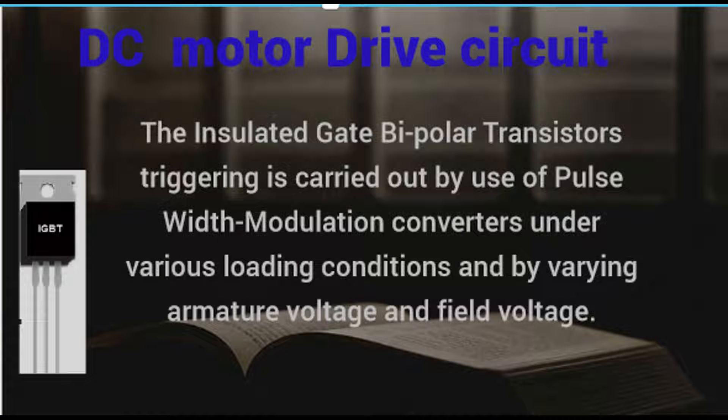IGBTs are available with higher current ratings and are rugged, but have slower switching speed. Their lack of an internal reverse-recovery diode means you must find an IGBT co-packaged with a diode matched to your application. The IGBT's triggering is carried out by use of pulse-width modulation converters under various loading conditions and by varying armature voltage and field voltage.